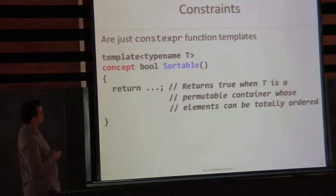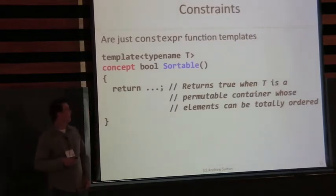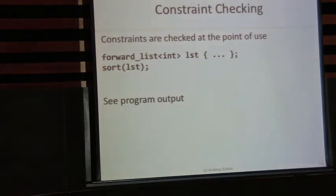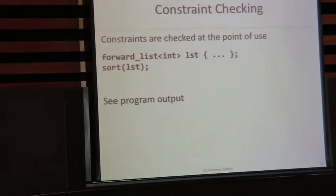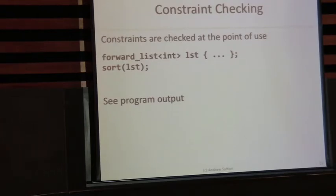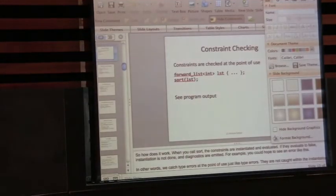T is a permutable container — this should actually be a random access permutable container, which is the constraint I'm assuming here. So if we declare a forward_list and try to call sort, we expect this not to work. Does the function run at compile time? Yes, it is constexpr. So when we actually run this, we expect to see errors. The errors wouldn't fit nicely on the slide, so I'm going to try something bold and actually try to run this live.